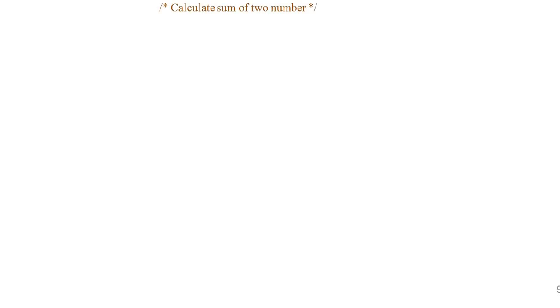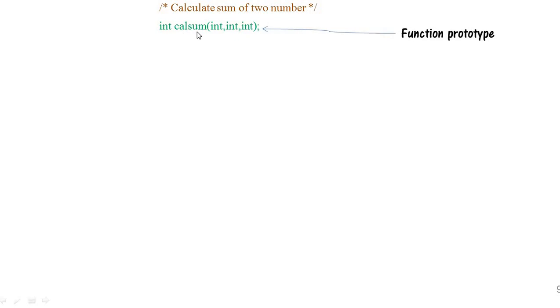Now let's see an example. This example is to calculate the sum of two numbers. In this example I have excluded the include statement, so just assume that I have already included it. The function name is `cal_sum` — that is, calculation of sum — and you can see integers are passed as arguments.